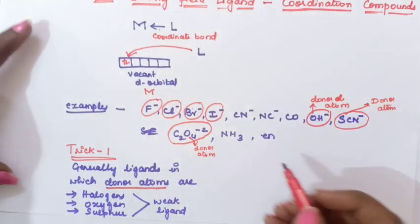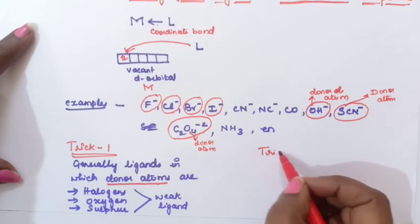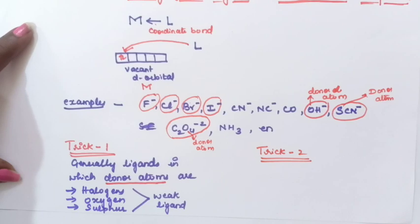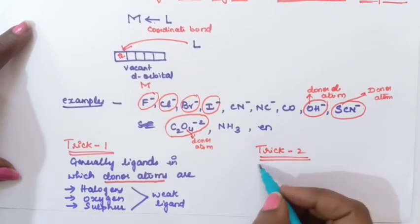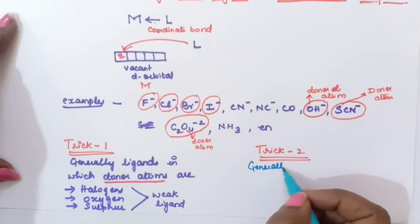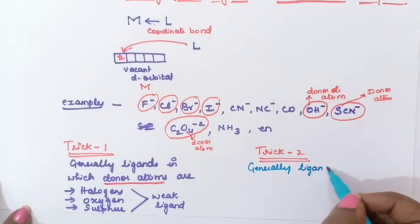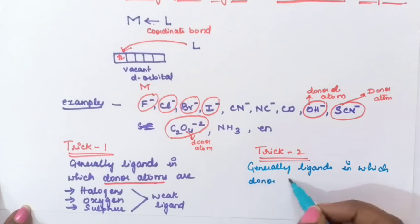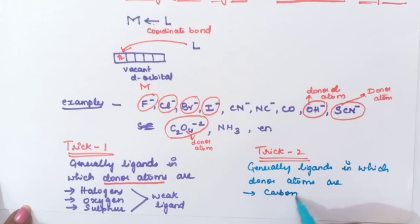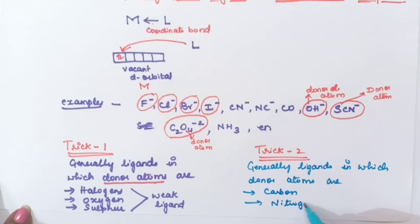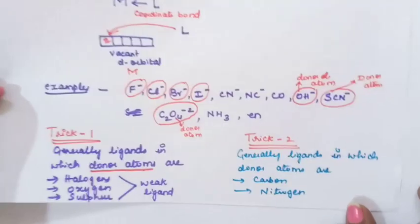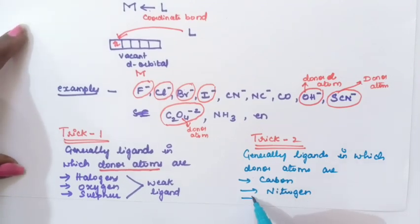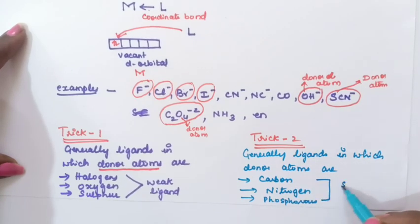Trick number two: generally, ligands in which the donor atoms are carbon, nitrogen, or phosphorus are called strong field ligands. So if the donor atom is carbon, nitrogen, or phosphorus, the ligand is a strong field ligand.